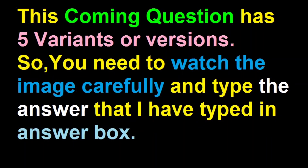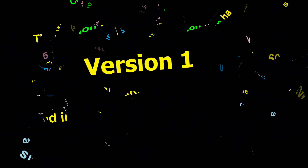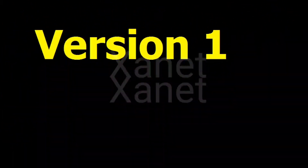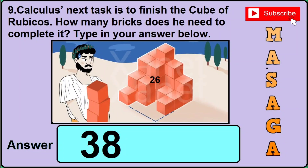Now question number 9 is a little bit confusing as it has got 5 different variants or versions, so you need to watch each and every detail of the image very carefully and type the answer that I have written in the answer box. For instance, in version 1, if you find this sort of image, then the correct answer would be 38, so you need to type 38.